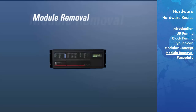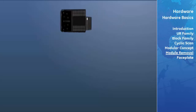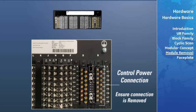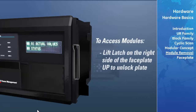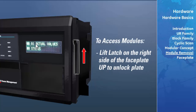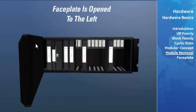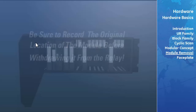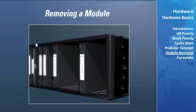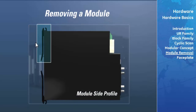The UR is comprised of functional modules on draw-out cards. Before withdrawing or inserting a module, always ensure that the control power is removed from the relay. Withdrawing and inserting a module is a two-handed procedure. To access the modules, the latch on the right side of the faceplate is pushed up and the faceplate is opened to the left. Be sure to record the original location of the module before withdrawing it to ensure the same or replacement module is inserted into the correct slot.